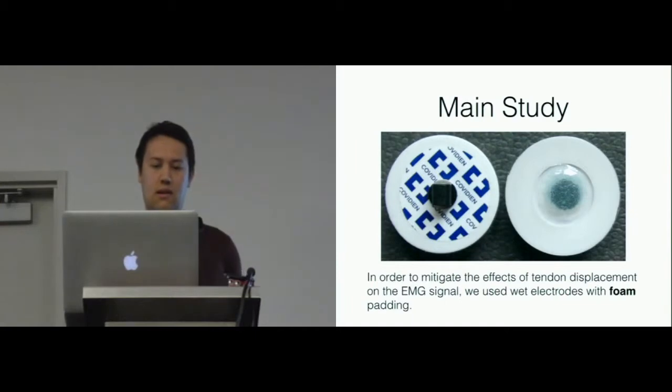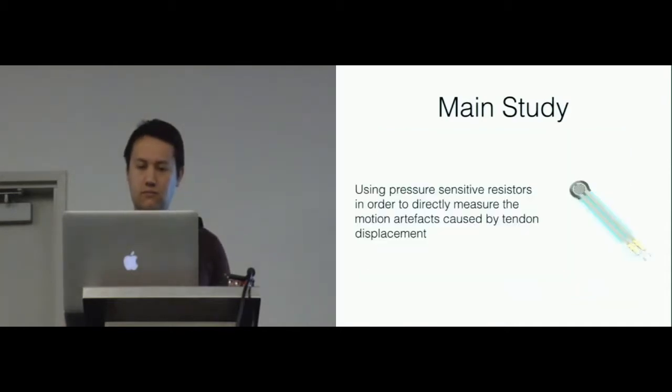In order to separate the modulation from the EMG signal, we used wet electrodes with foam padding, which helped to remove the artifacts caused by pressure. We used these force sensitive resistors, pressure sensors, to infer the change in shape of the wrist, as some devices do, and thus what would have caused the modulation of the EMG signal in the previous experiment.